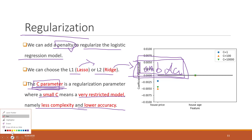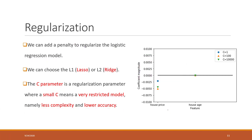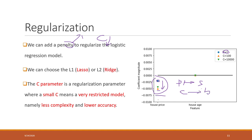When C becomes smaller, the penalty will be bigger, so the size of the coefficients will be smaller. Conversely, when C increases, the coefficients also increase, because the penalty becomes smaller. So smaller C means bigger lambda means bigger penalty, and larger C means smaller penalty and larger coefficients.